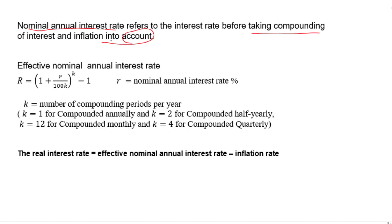If you take compounding of interest into account, you will have the effective annual interest rate. The relationship between nominal annual interest rate and effective annual interest rate is given by a formula where R is the nominal annual interest rate and k is the number of compounding periods per year: k equals 1 for compounded annually, 2 for compounded half-yearly, 4 for compounded quarterly, and 12 for compounded monthly.